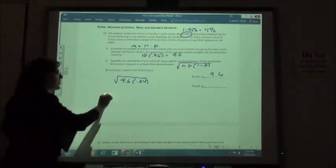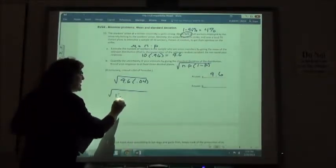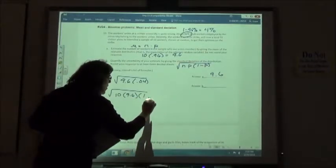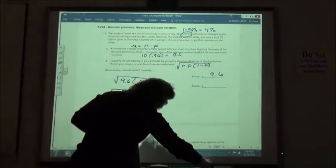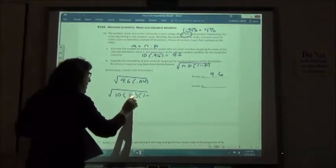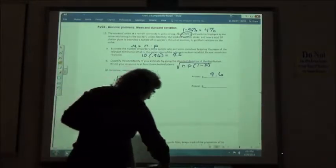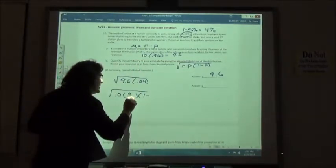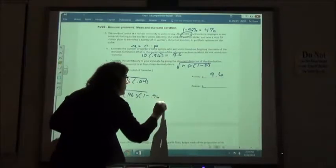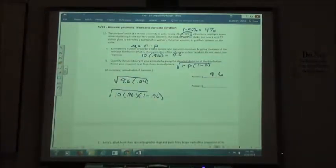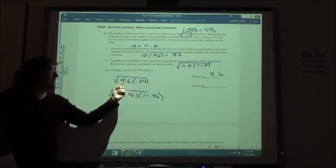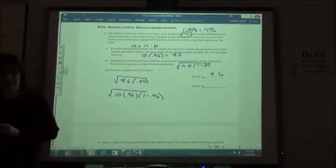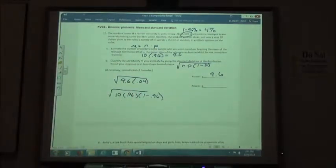You could write it out the long way if you wanted to. 10 times .96 times 1 minus .96. Probably in the book they're going to write it out like that the long way. But we've already done this times this to get this, and here we're just subtracting. So I would take the 9.6 times the .04 and then do the square root of your answer.